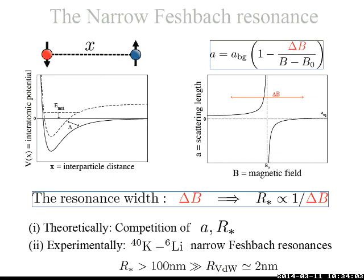Let me remind you what happens when we apply a magnetic field to the scattering length. We can describe the scattering process between the impurity and the fermion using a two-channel model. There is the open channel and the closed channel. Whenever there is a molecular bound state in the closed channel, this can change the scattering properties. By applying a magnetic field, you can change the position of this molecular state with respect to zero, and in this way change the value of the scattering length.